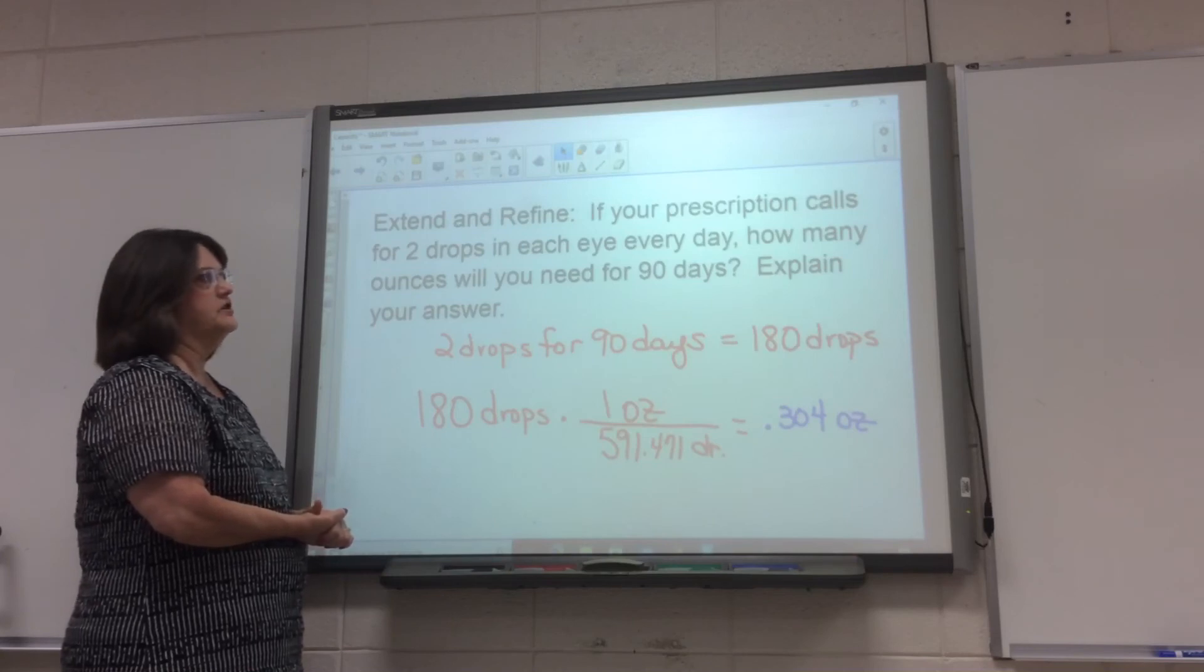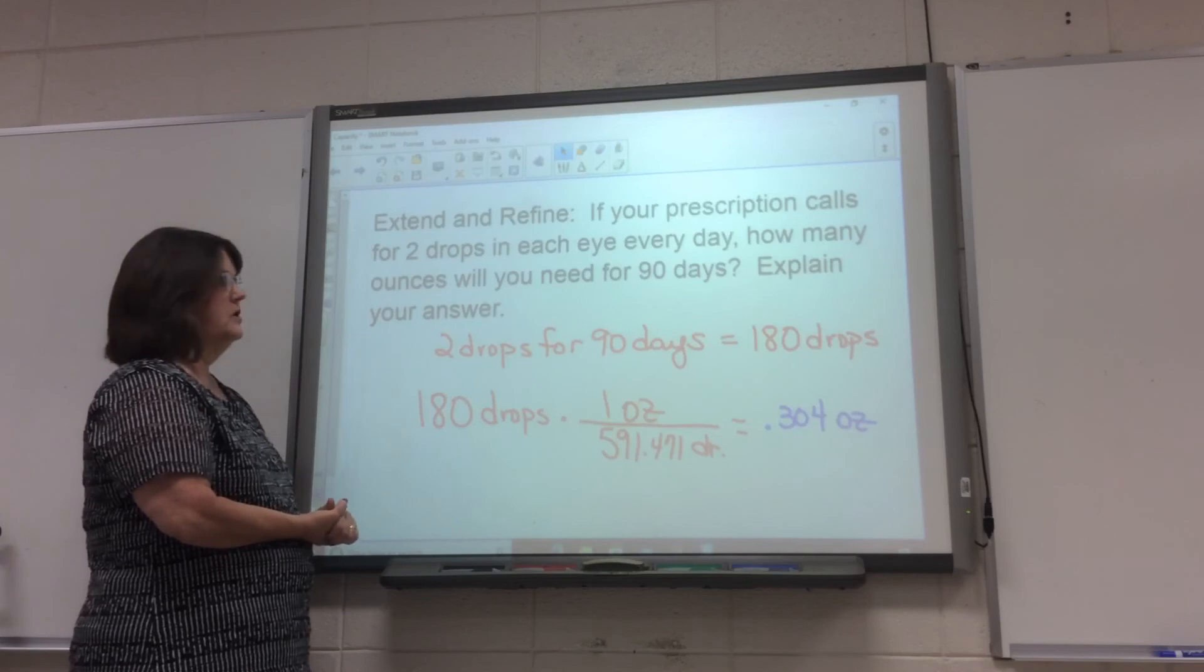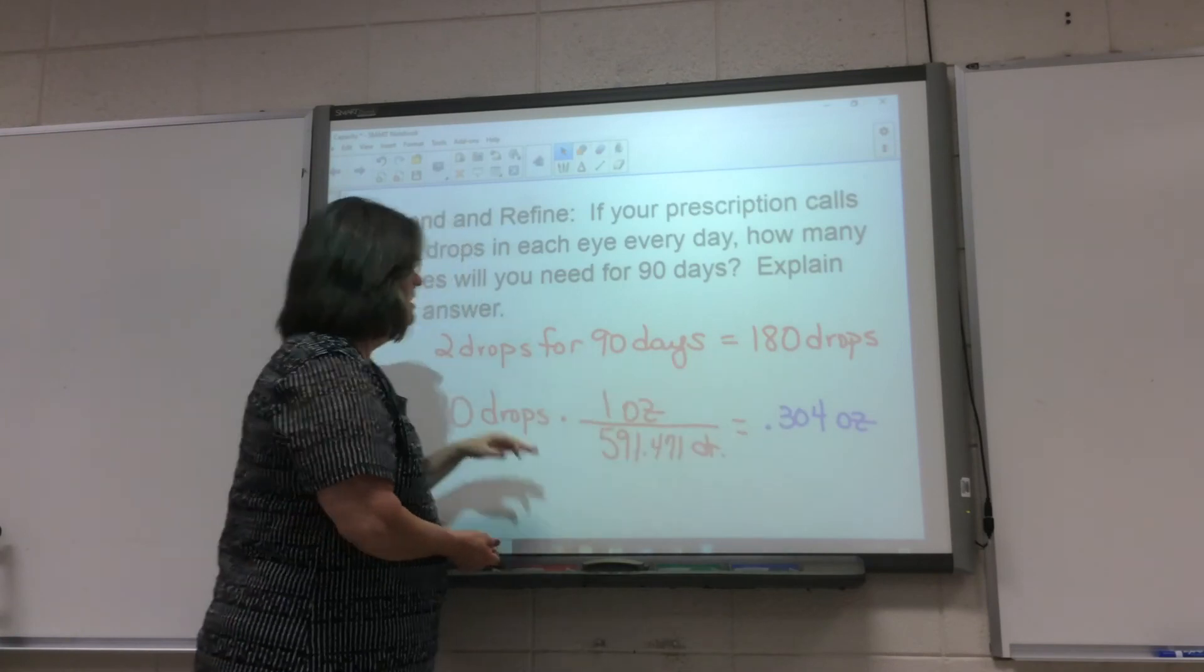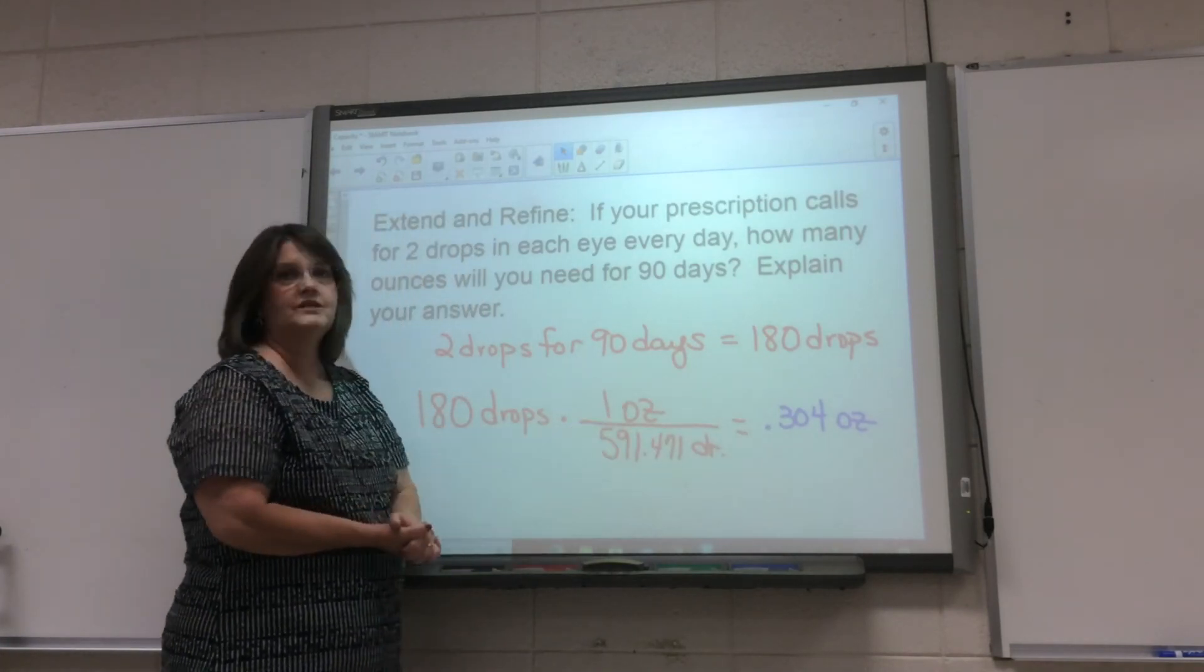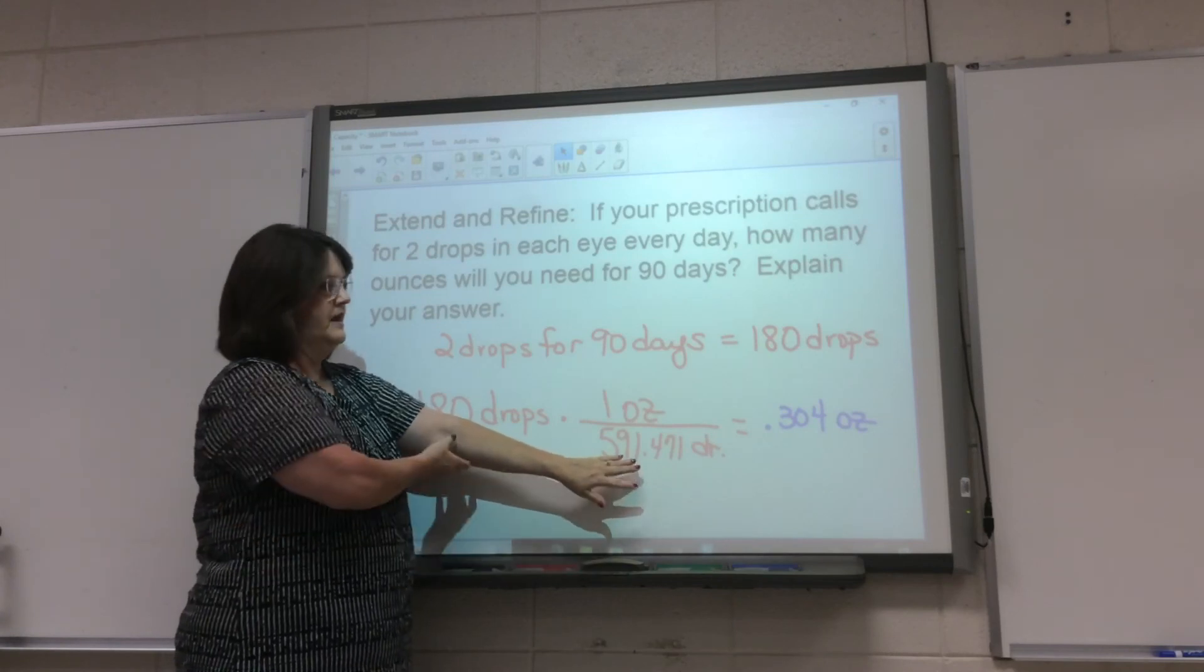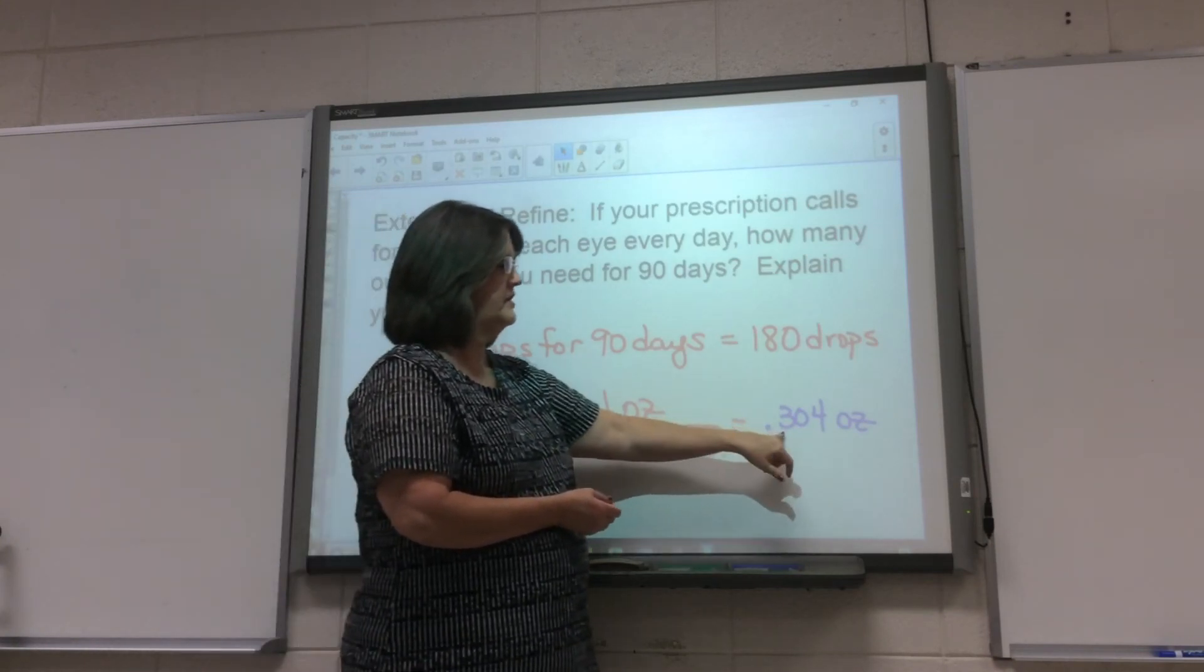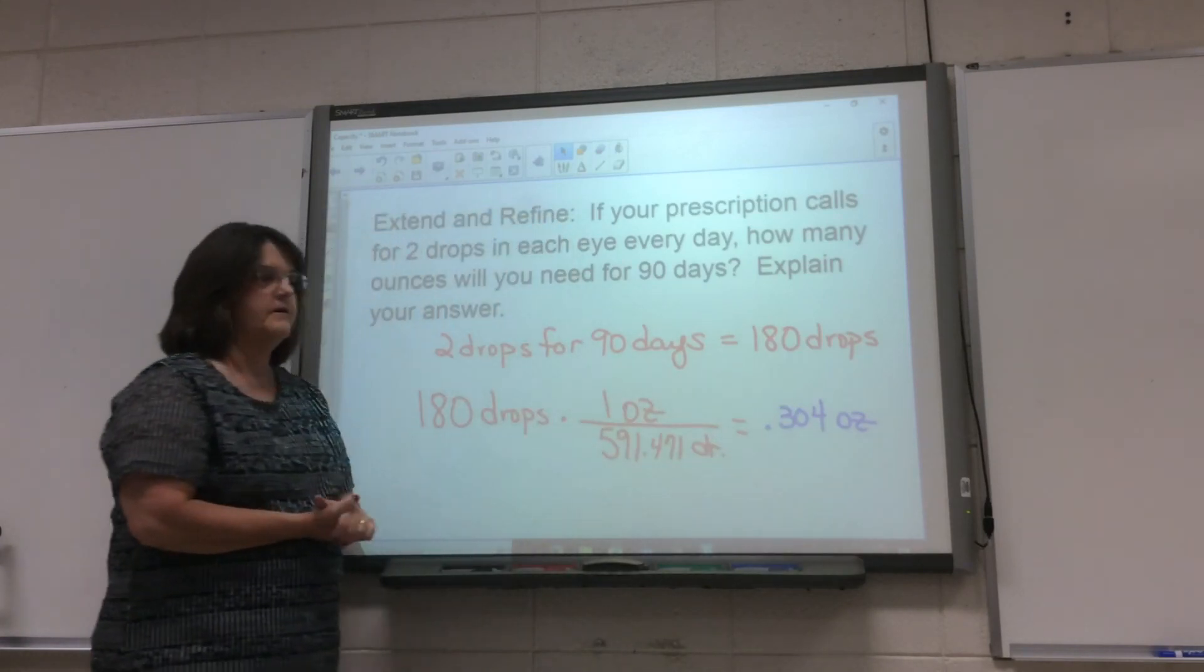If your prescription calls for two drops in each eye every day, how many ounces would you need for 90 days? I honestly had to figure that out. All right, two drops for 90 days, two drops a day, that's 180 total drops. 180 drops, how many drops are in one ounce? This is the kicker, this is where I called them. There are 591.471 drops in an ounce. Then I took 180, divided it by this, and you get 0.3 ounces if you round it off.